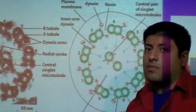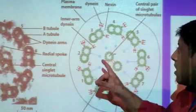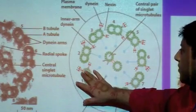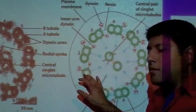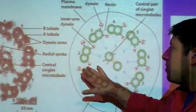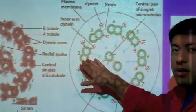Some other key features of this picture: as you can see, there are dyneins coming off of one set of these doublets and then they're actually going to be interacting with the neighboring microtubule.